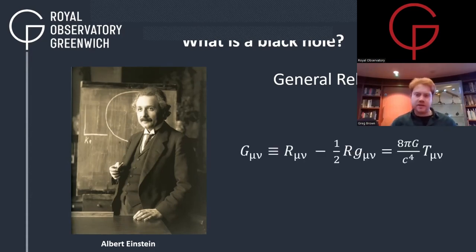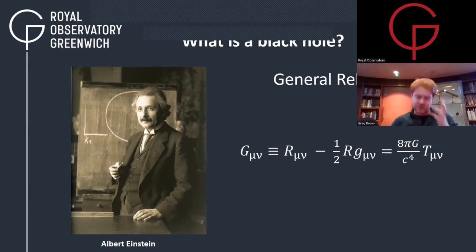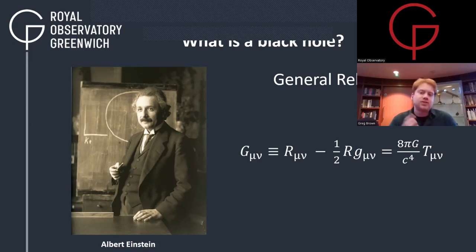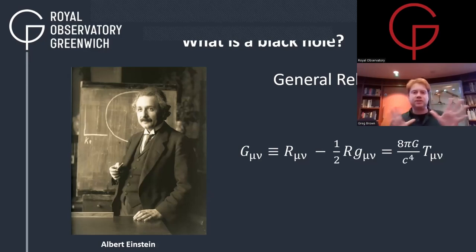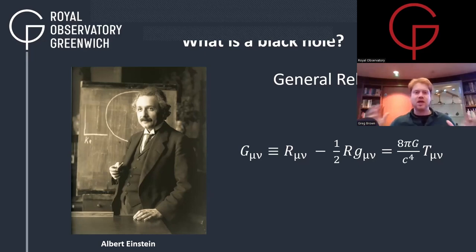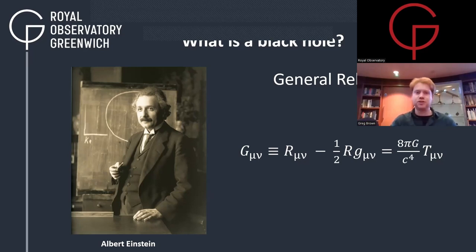Frankly, it's complicated — every single term is ridiculous and has multiple components inside it. It's a massive, sprawling set of equations to describe how gravity works. To be honest, Albert Einstein did not really expect anyone to be able to solve it. He didn't expect there to be a solution at all. It took a year.